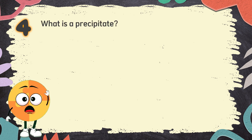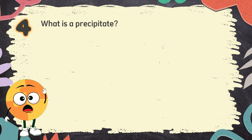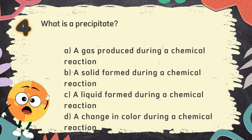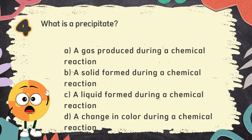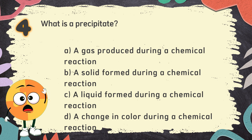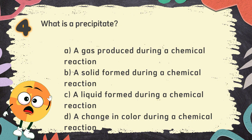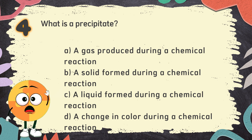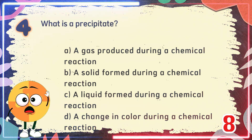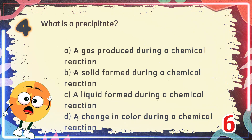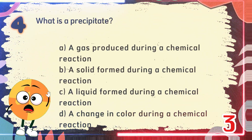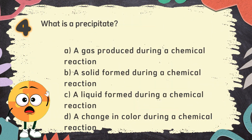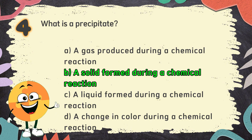Number 4. What is a precipitate? The choices are: A. A gas produced during a chemical reaction, B. A solid formed during a chemical reaction, C. A liquid formed during a chemical reaction, D. A change in color during a chemical reaction. The correct answer is B. A solid formed during a chemical reaction.